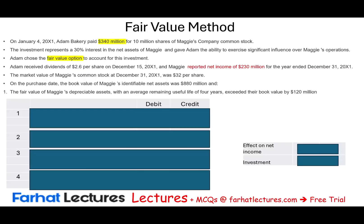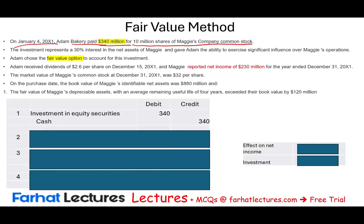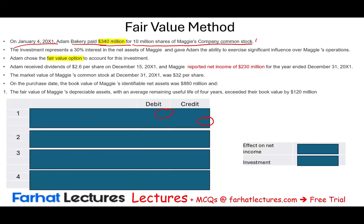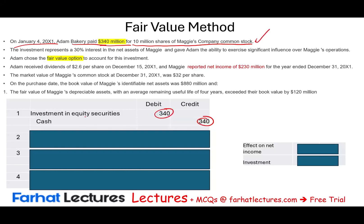The first journal entry is to record the purchase of the investment. On January 4th, Adam Bakery paid $340 million for 10 million shares of Maggi's common stock. We debit Investment in Equity Securities $340 million and credit Cash $340 million. That records the original purchase. This investment represents 30% of Maggi's net assets and gave Adam the ability to exercise significant influence, but Adam chooses the fair value method.